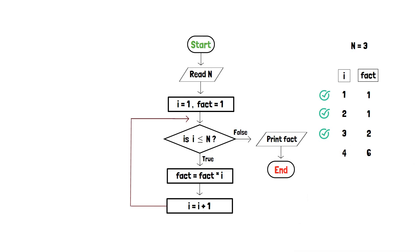At this point, the condition in the decision box becomes false, since 4 is not less than or equal to 3. As a result, the variable fact is printed, which is 6, and the program is terminated. Thank you.